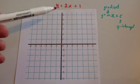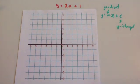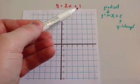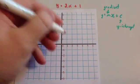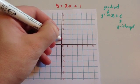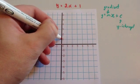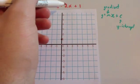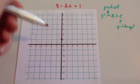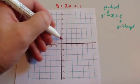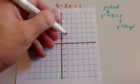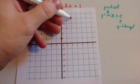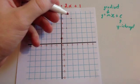So if I wanted to draw the graph y equals 2x plus 1, first of all I would start off with the y-intercept. The y-intercept is 1, so that means it crosses the y-axis here. Next, the gradient. The gradient is 2, so that means if I go across one square I go up 2 to here.